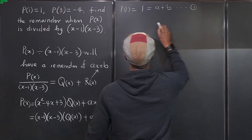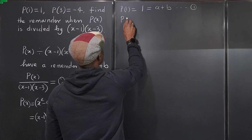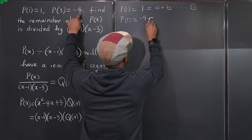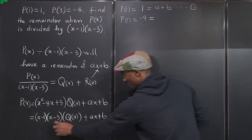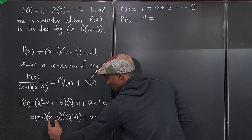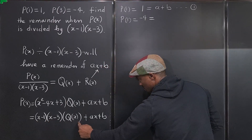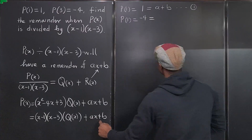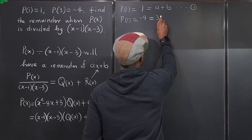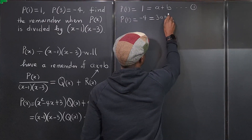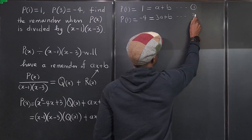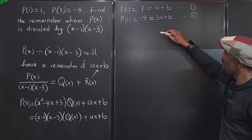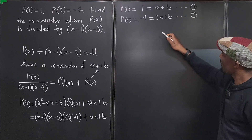Now for P(3) = -4: plugging in x = 3 makes the divisor term zero again, so we get 3a + b = -4. That's equation two. Now we have a system of two equations: a + b = 1 and 3a + b = -4.